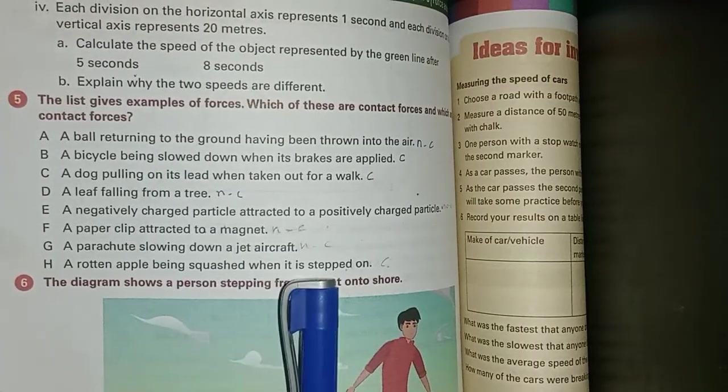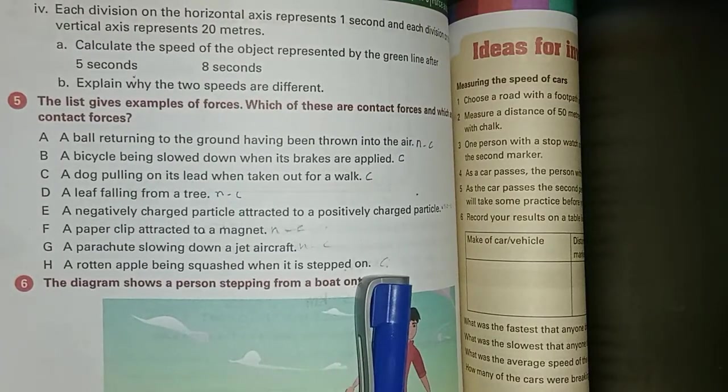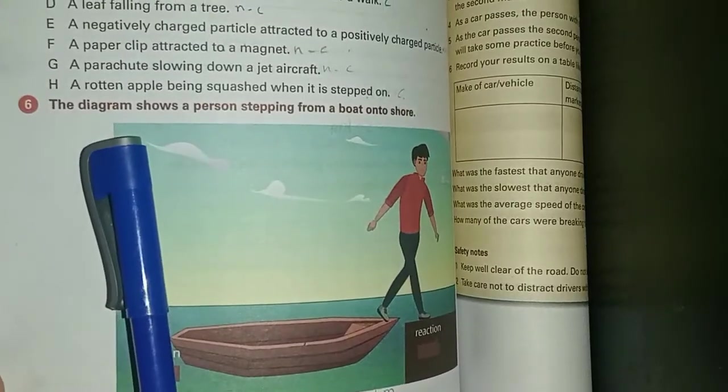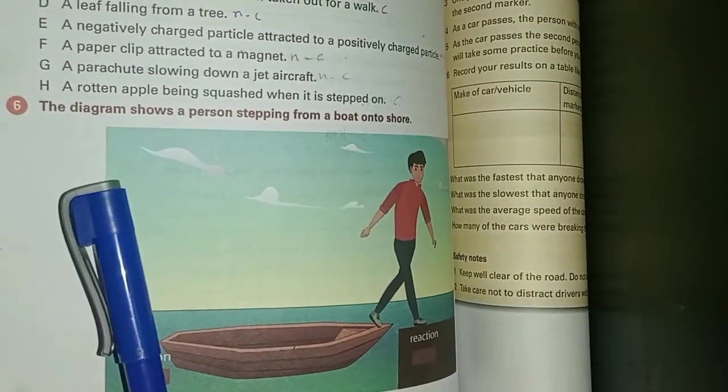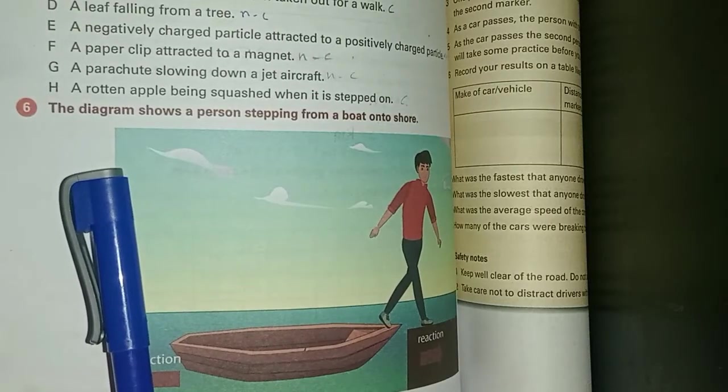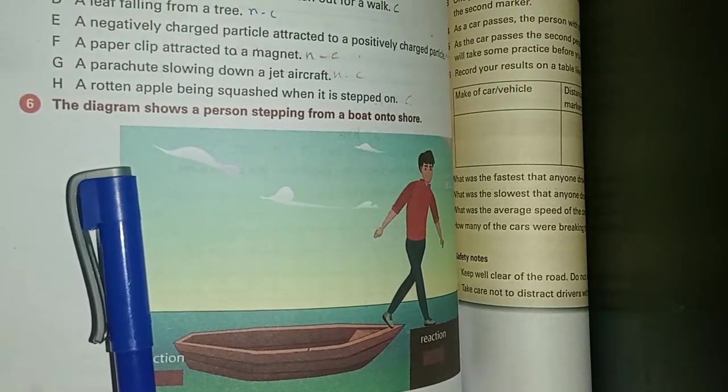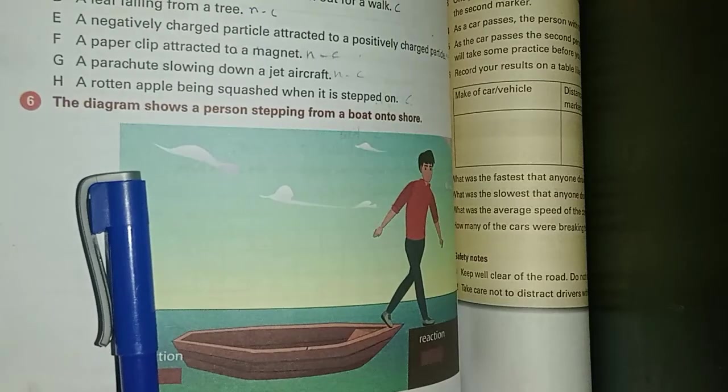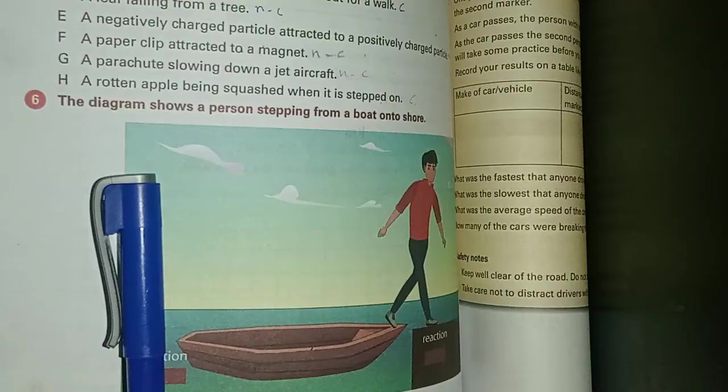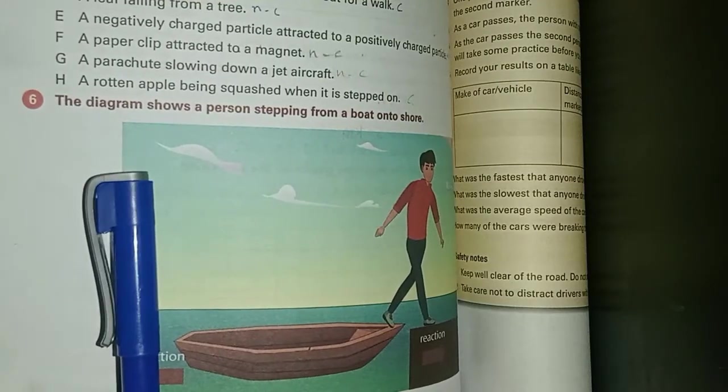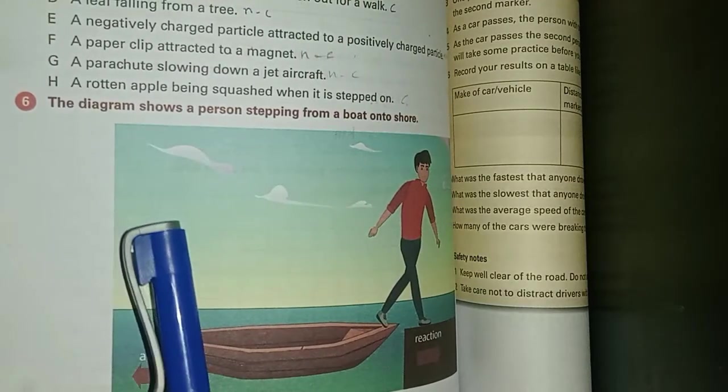A parachute slowing down a jet aircraft - contact. A rotten apple being squashed when it is stepped on - contact. Sixth question is the exercise's last question. Before moving forward with this question, if you like this video, please like it. This video is made for your convenience. If this video is useful to you, subscribe to the channel and also press the bell icon button, so that every new video coming from us will reach you on time.